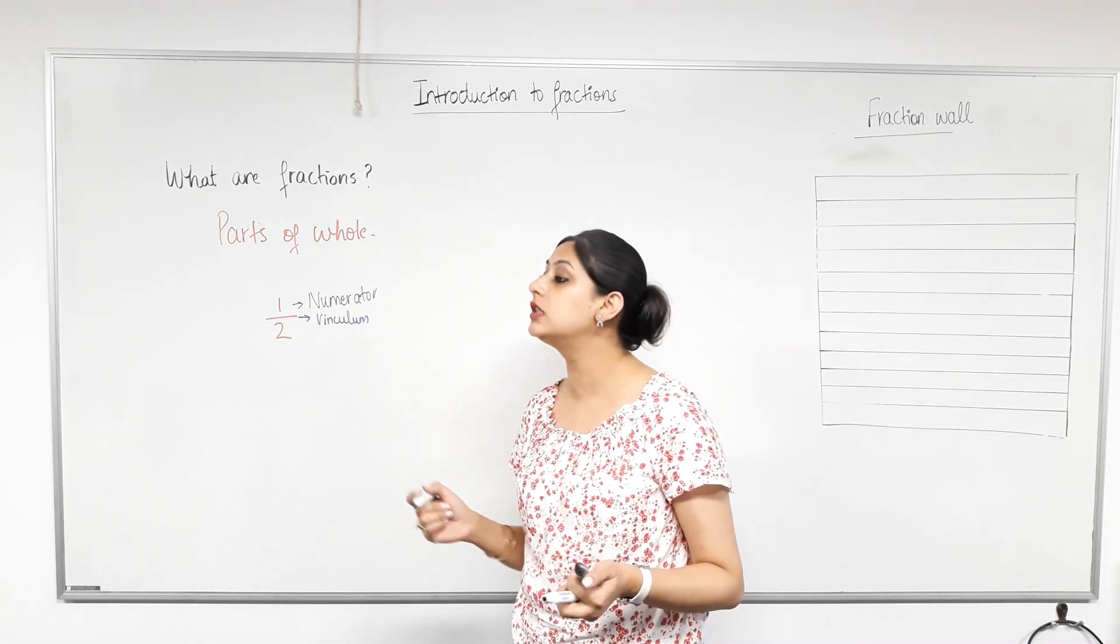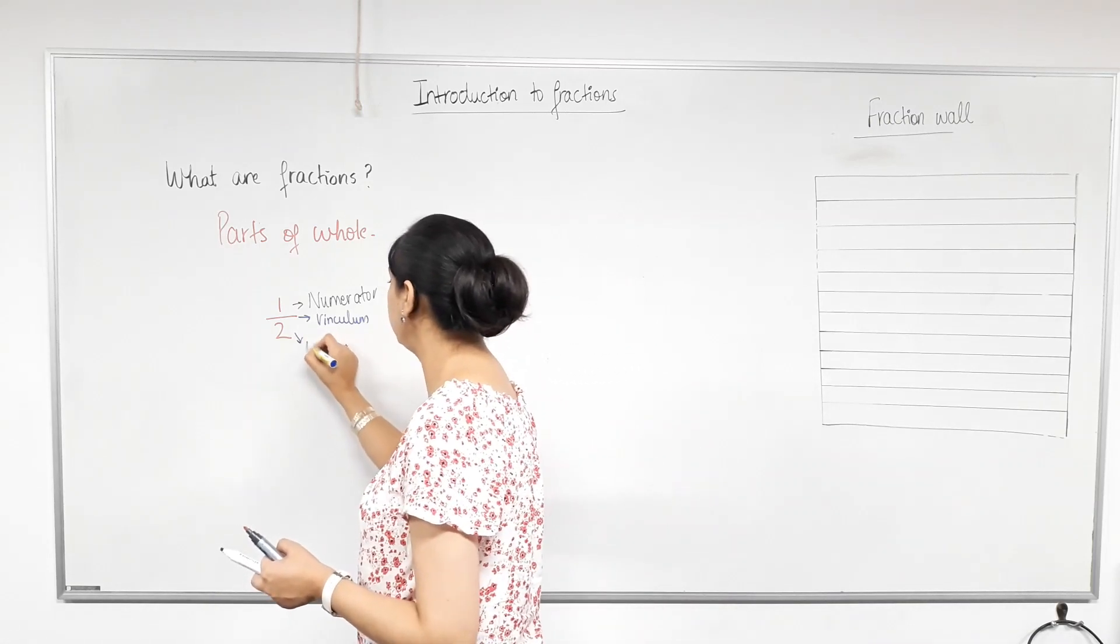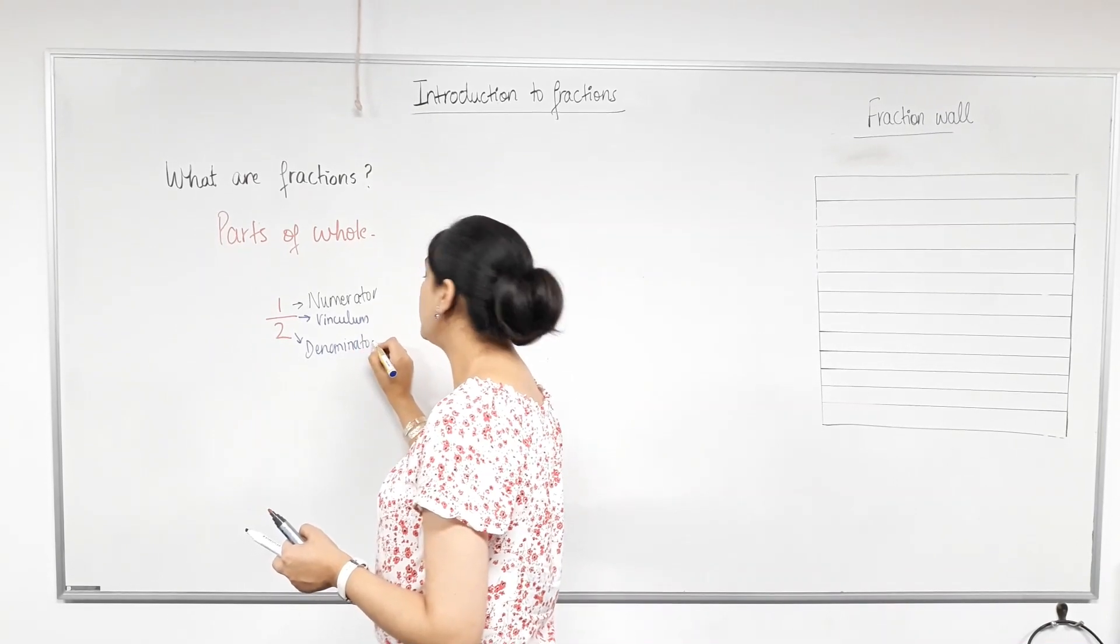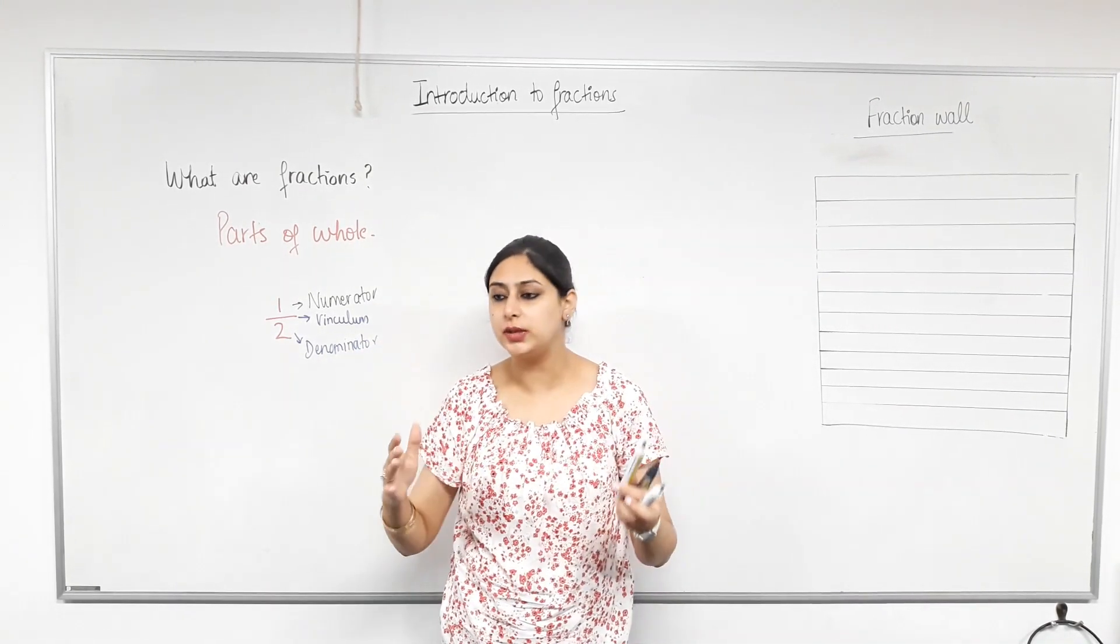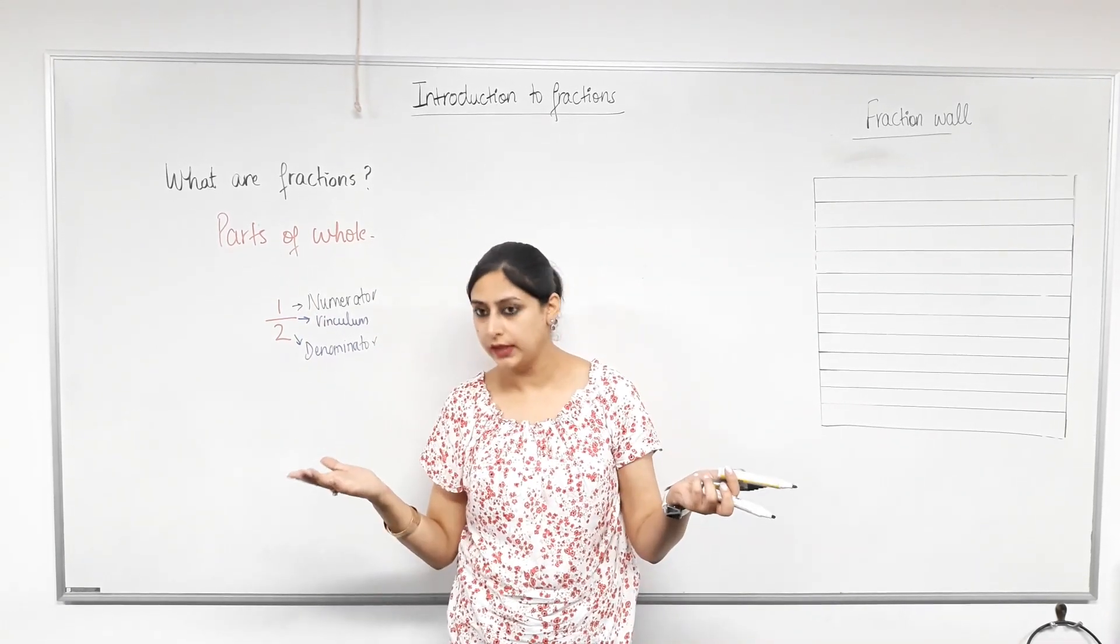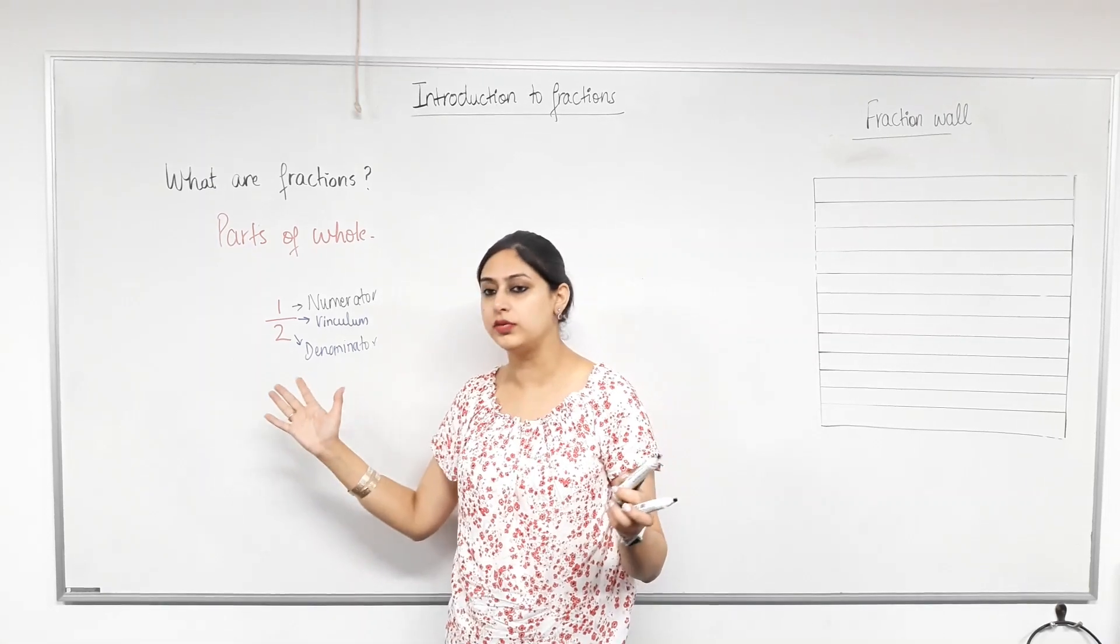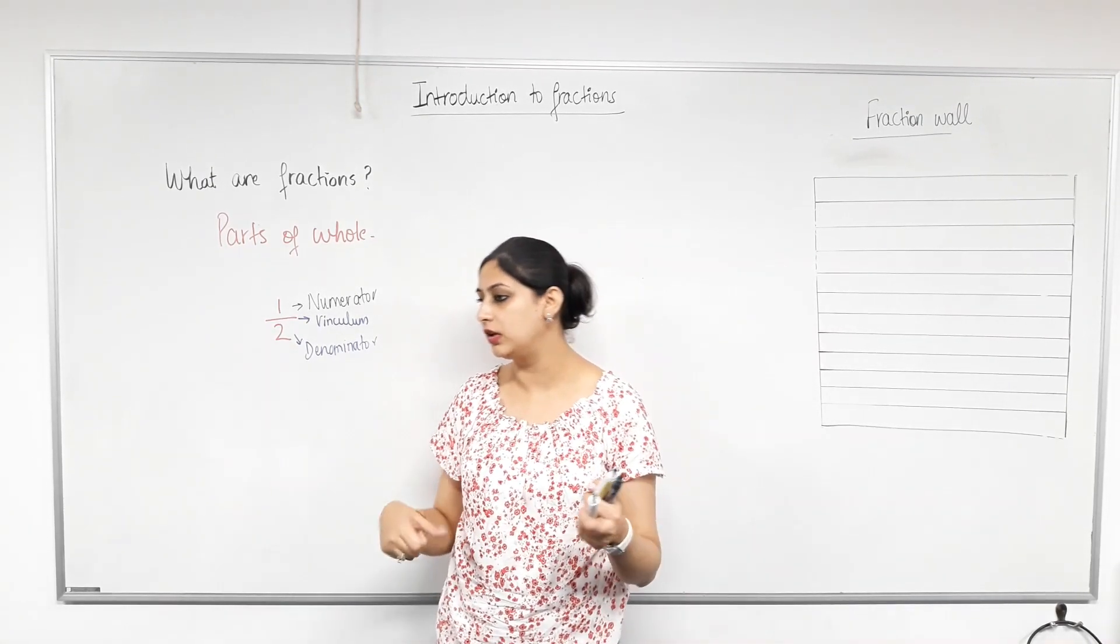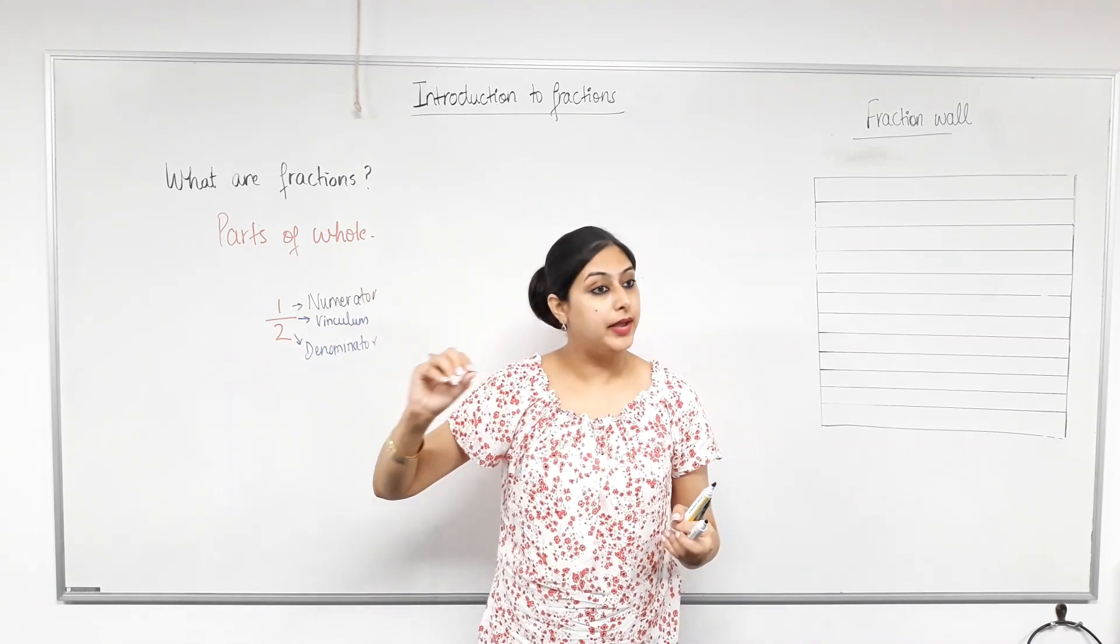What's the bottom one called? The bottom one is the denominator. Yes. The bottom one is the denominator. Now, so the vinculum is a very important line. That's how we differentiate between the top and the bottom, right? We rarely use that line. We just say one over two or a half. So that's why it's not surprising that most of us don't even know what that line is called. But it's good to know.